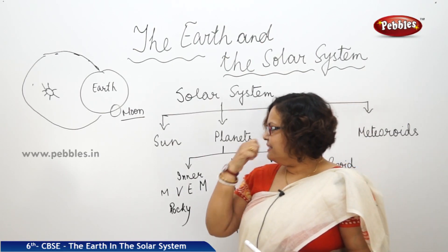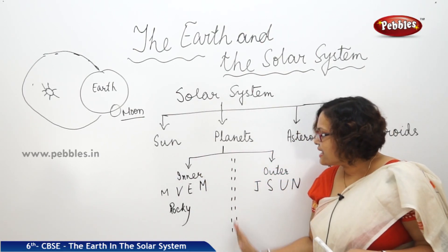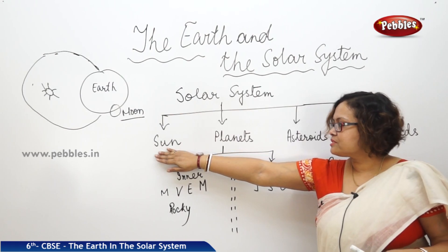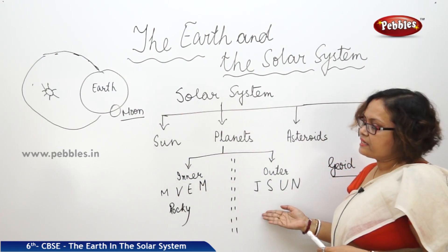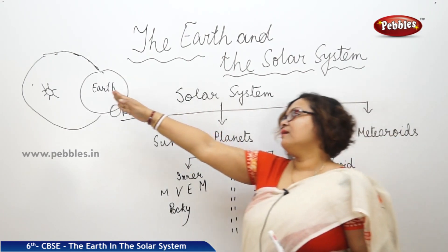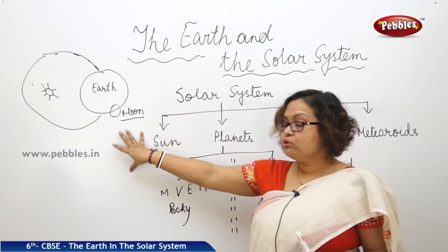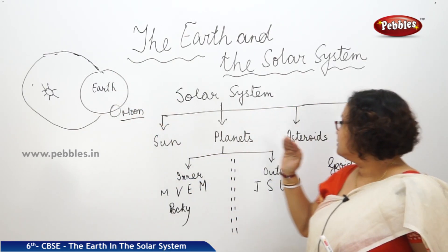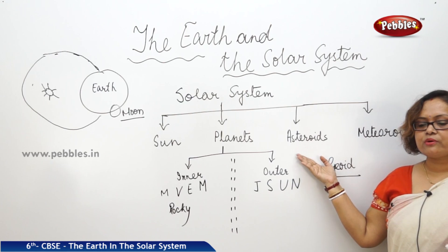Now let us see what is the asteroid belt. We spoke about the sun, we know about planets, we know about our earth, we know about the moon. Let us come to the third part, that is asteroids.